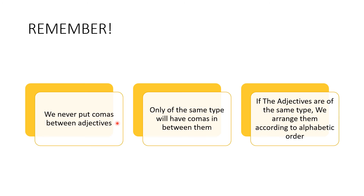Remember, we never put commas between adjectives of different types. Only adjectives of the same type will have commas between them. For example, 'This is a blue, green, yellow hat' specifies many colors. When adjectives are of the same type — such as all colors or all sizes — we put commas between them and arrange them in alphabetical order, since NoSASCOM cannot apply. So it will be blue, green, yellow — B, G, Y.